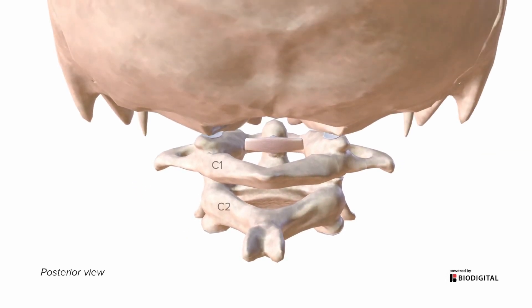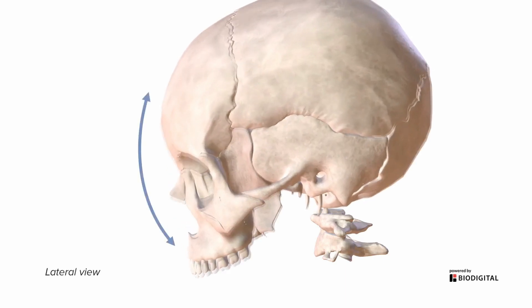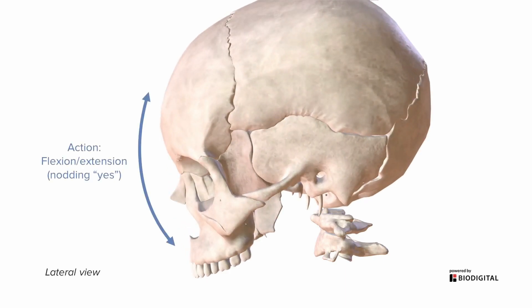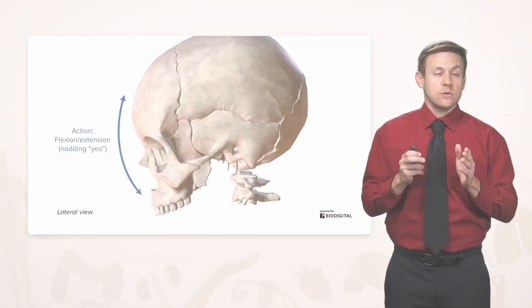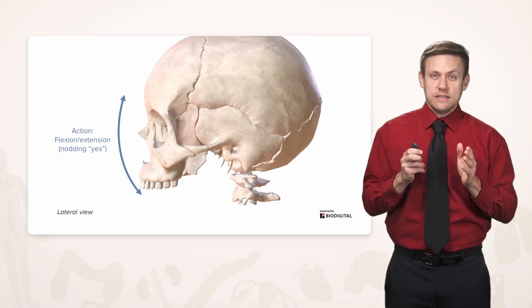With the skull added, we can see how all three structures come together. The cranium rests on C1 via the occipital condyles — bumps on the occipital bone — sitting directly on the superior articular facets. The orientation of those facets allows flexion and extension, like nodding yes, between C1 and the skull. So we have 'no' at C1–C2 and 'yes' between C1 and the skull.